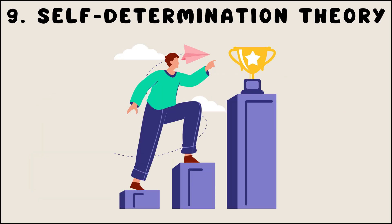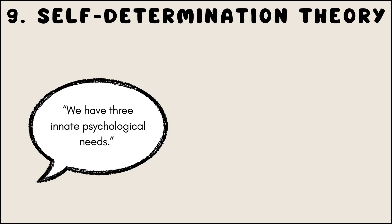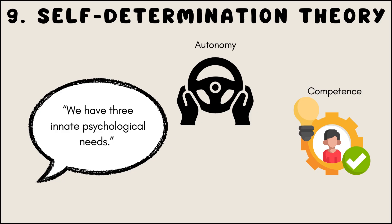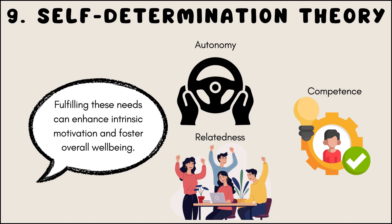Self-determination theory focuses on the intrinsic and extrinsic factors that motivate individuals to engage in learning and other activities. It suggests that individuals have three innate psychological needs: autonomy — the desire to control one's own behavior; competence — the desire to master skills and achieve goals; and relatedness — the desire to feel connected to others.